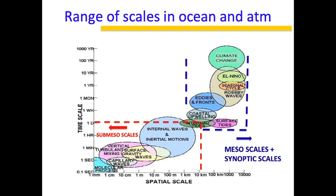In general, this map can be divided into two halves. One is submesoscale, which has a spatial scale of the order of 10 kilometers or lower and a timescale of the order of one day or less. Then you have the mesoscale and synoptic scales, which have a spatial scale greater than 10 kilometers and a timescale greater than one day. This is very typical — you have small-scale vortices and small-scale waves like internal waves, which don't last more than a day.